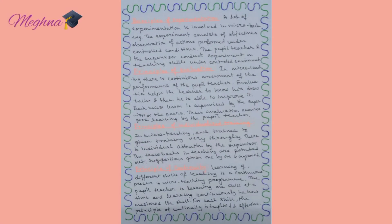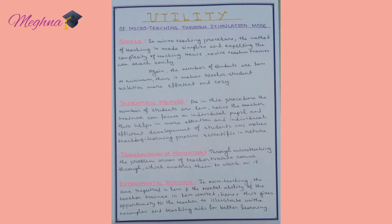The principle of experimentation means micro teaching is an experiment consisting of observation of actions performed under controlled conditions. The principle of evaluation means there is continuous assessment of the teacher trainee's performance, helping them know and modify their drawbacks. The principle of individualized training means each trainee receives thorough attention from the supervisor. The principle of continuity means micro teaching is a cyclical and continuous process of teaching and re-teaching. Its utility is that it helps the teacher trainee practice the art of teaching within a small period of time in front of a small group.